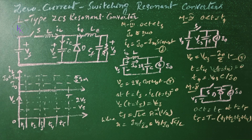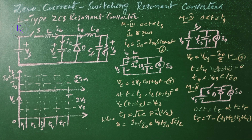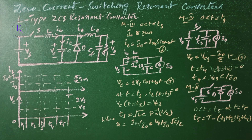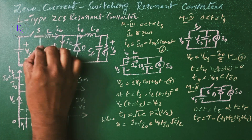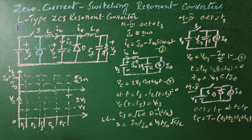The peak resonant current Im must be higher than the load current I0, and this sets a limit on the minimum value of load resistance R. However, by placing an anti-parallel diode across the switch, the output voltage can be made insensitive to load variations.